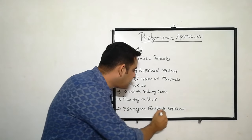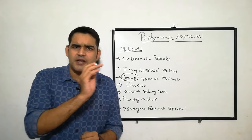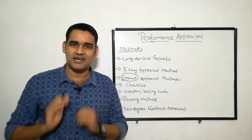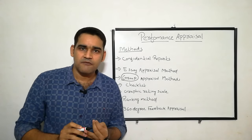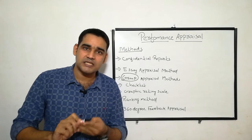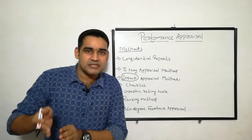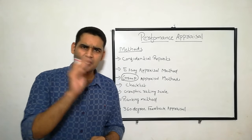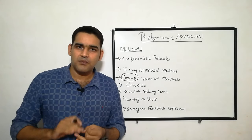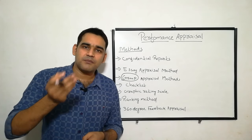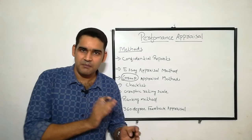The last method is 360-degree feedback appraisal. That means from everywhere the information or feedback is collected regarding an employee. Feedback is collected from the superior, from the team members, from the subordinates, from the patient or client itself. An important thing is self-examination — from the employee also the feedback is taken regarding the weakness and strength of that person. From everywhere the feedback is taken — that is called 360-degree feedback appraisal.